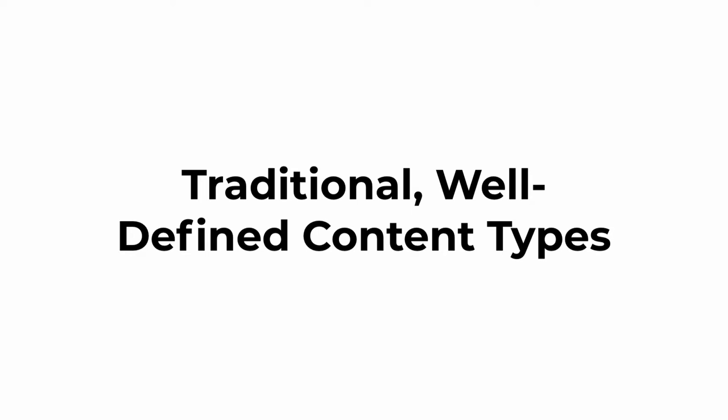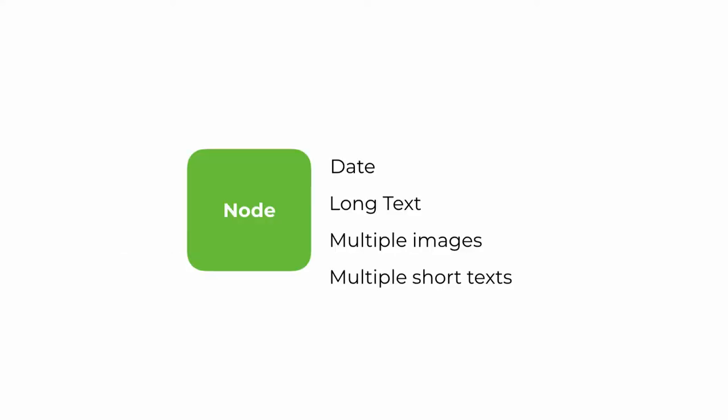My favorite type is traditional, well-defined content types — the old-fashioned way, where you create your fields and it's really clear. You use a node. When is this useful? For things like events, articles, job postings, courses — where you want a well-defined form, you're controlling the content really well, you have a set of fields people have to fill in. The content gets stored and printed out in a predictable way, with no ambiguity. A content type always has a standard set of fields.